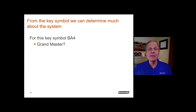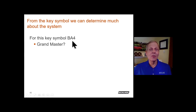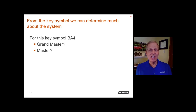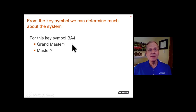From key symbols, we can determine quite a bit of information using standard key coding. For example, the symbol BA4 would be stamped on an individual change key. The first letter B tells us the grand master key is B. The letter pair BA tells us this change key comes under the BA master key. Master keys are always double letters, so BA is the master and B is the grand master associated with this key.